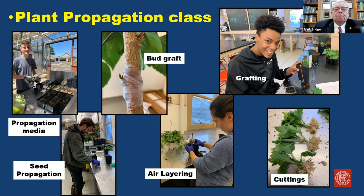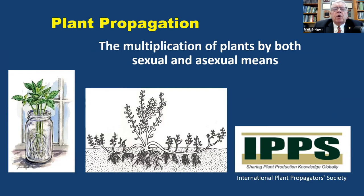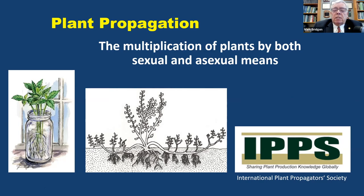We're going to talk about plant propagation today. All plant propagation is essentially multiplying plants — figuring out different ways to increase their numbers, either by sexual or asexual techniques. If you're into propagation, the International Plant Propagator Society is a national organization with three regions in the United States — Eastern, Western, and Southern — and their motto is 'to seek and share.' They are always willing to share information.